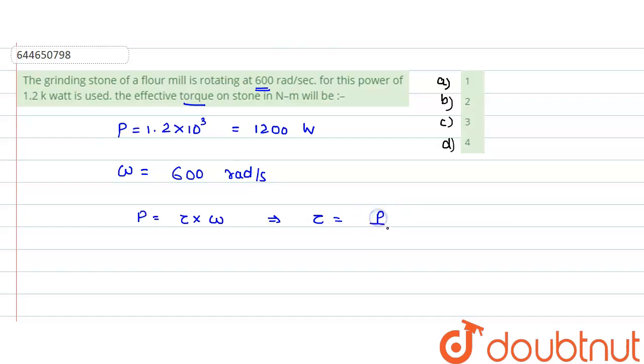Now what is the value of the power which has been given? It is 1200 watt. What is the value of the angular velocity? It is 600 radian per second. So if you calculate this, our torque would turn out to be 2 and the unit of torque is newton meter.